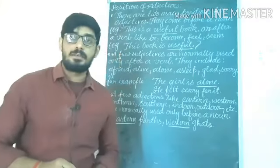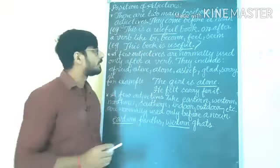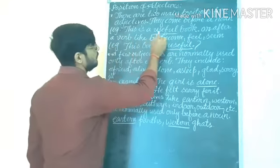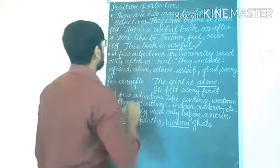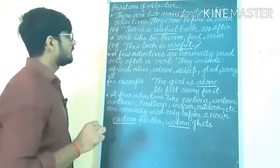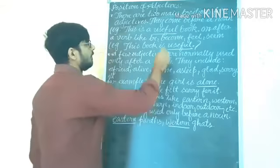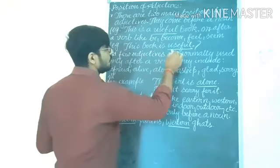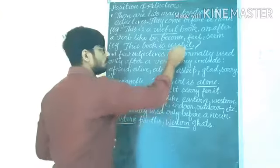Now let's see the position of adjectives. There are two main positions for adjectives. They come before a noun — for example: 'This is a useful book,' where 'book' is the noun and 'useful' is the adjective. Or they come after a linking verb like be, become, fail, or seem — for example, the verb forms be, is, am, are, was, were, become, fail, seem. So in 'This book is useful,' after 'is' you are getting the adjective 'useful.'